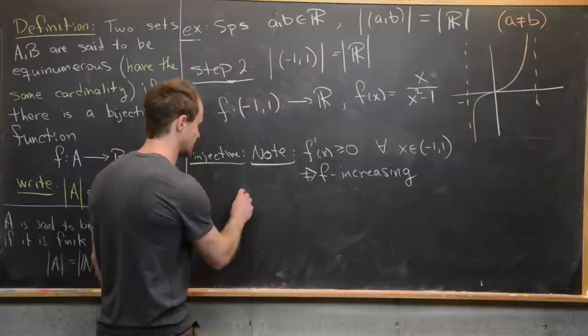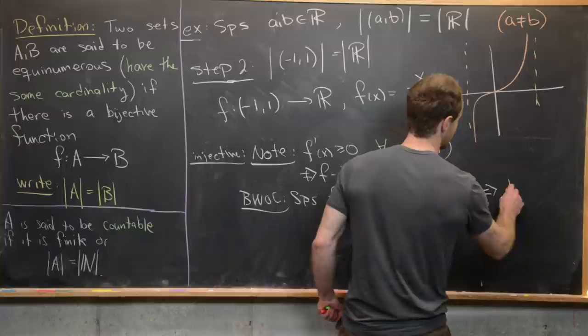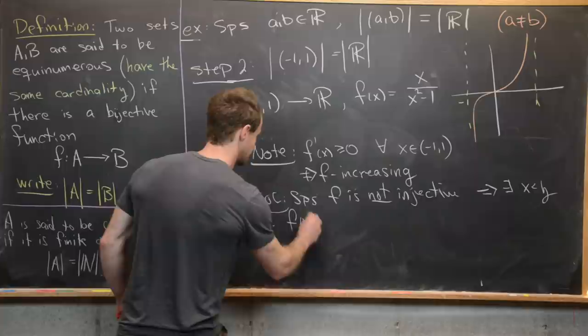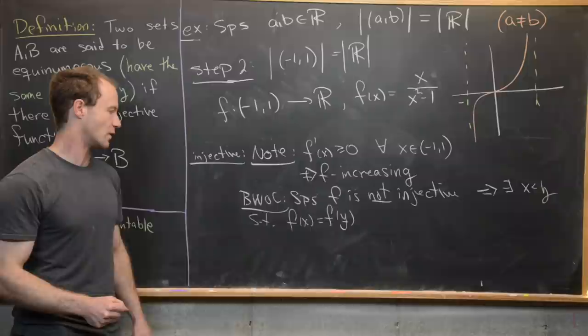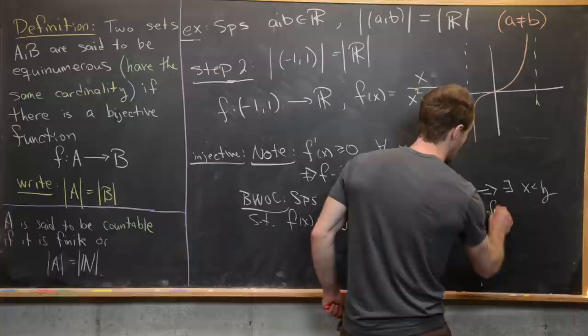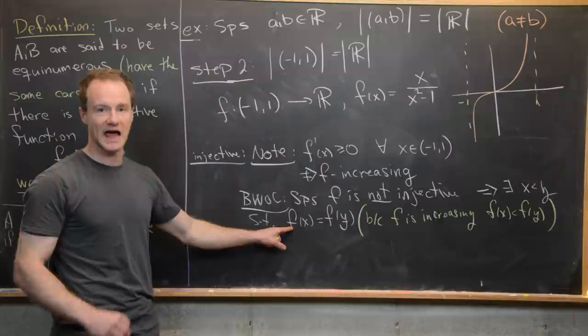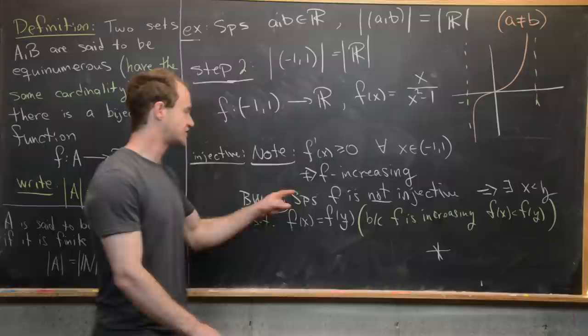We show that an increasing function is injective by contradiction. Suppose f is not injective — then there exist x < y such that f(x) = f(y). But since f is increasing and x < y, we must have f(x) < f(y). This gives us f(x) = f(y) and f(x) < f(y) simultaneously, a contradiction. So f is indeed injective.